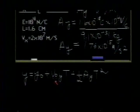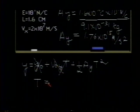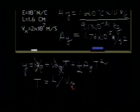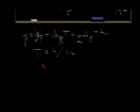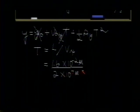So this term is going to drop out, this term is going to drop out, and the time then will simply be equal to the length of the plates, L, divided by the horizontal velocity. And if we calculate that, this is 1.6 centimeters, that's 1.6 times 10 to the minus 2 meters, and we then divide that by v sub x, which is 2 times 10 to the seventh meters per second. This gives us a time of 8 times 10 to the minus 10 seconds.